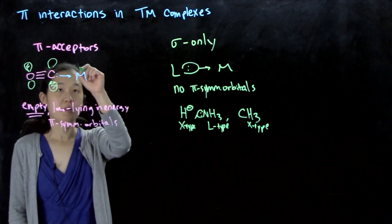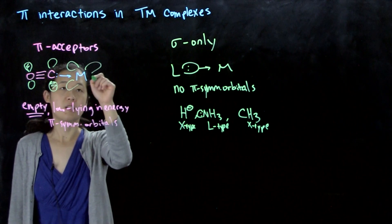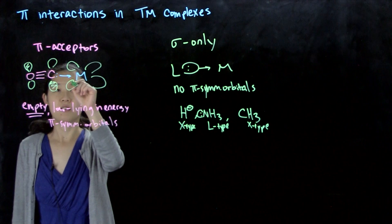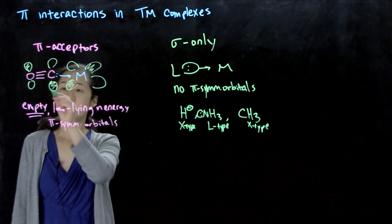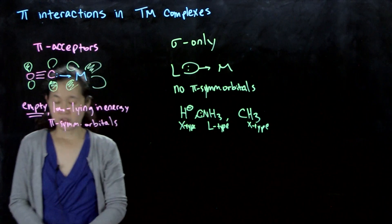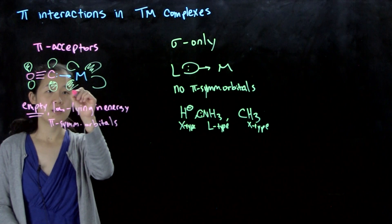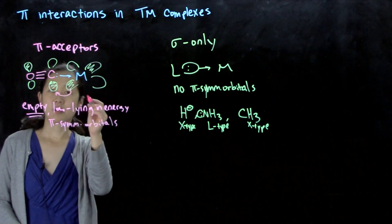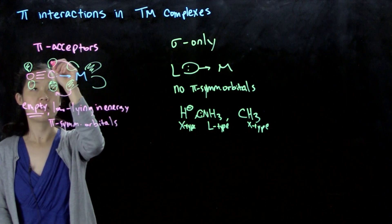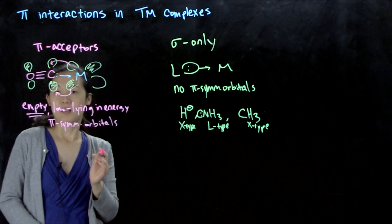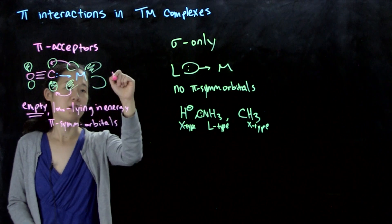When you have your metal d orbital, let's say this is the dxz. This is empty, this empty pi-star. So we can get what's called backbonding, where we go from a filled d orbital into this empty pi-star. So this is a pi interaction. That's why it's called pi-acceptor. And this is called backbonding.